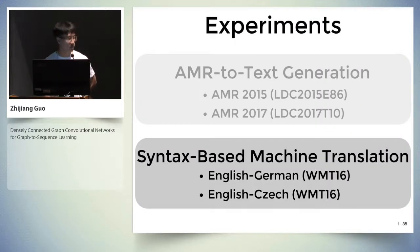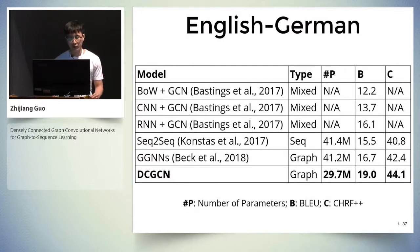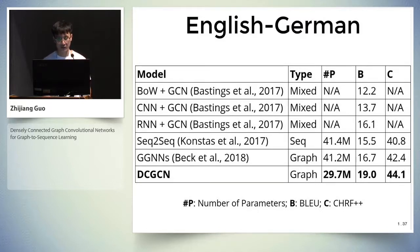For the second task, syntax-based machine translation, we have two datasets: English-to-German and English-to-Czech. The translation datasets have much more training instances than the AMR training data. Baselines for English-to-German include mix encoders using a two-layer GCN after a bag-of-words, convolutional neural networks, or recurrent neural networks, as well as sequence encoders and recurrent graph encoders. Our proposed model achieves higher performance on both evaluation metrics while requiring fewer parameters.